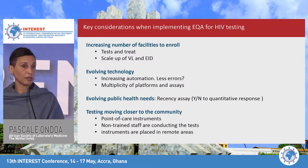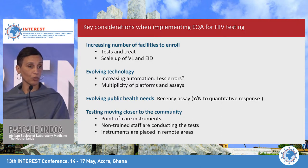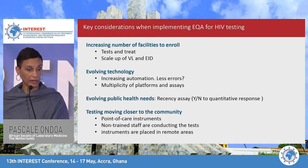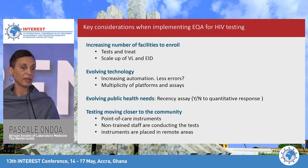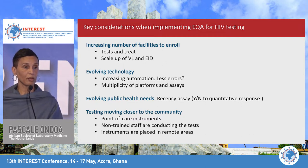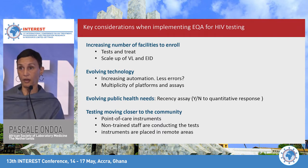There are key considerations when implementing EQA for HIV testing. First, there is an increasing number of facilities to enroll in programs due to evolving policies like test-and-treat and the scale-up of viral load. There is also evolving technology involving more automation — and the question is whether that induces fewer errors. There is a multiplicity of platforms and assays, and evolving public needs, such as the recency assay now recommended to provide data on HIV prevalence during screening.